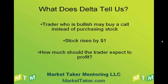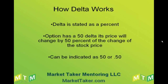What does Delta tell us? A trader who may be bullish may buy a call instead of purchasing stock. What if the stock rises by $1? How much should the trader expect to profit? Delta is stated as a percent. An option that has a 50 Delta means its price will change by 50% of the change of the stock price, and this can be indicated by either 50 or 0.50.